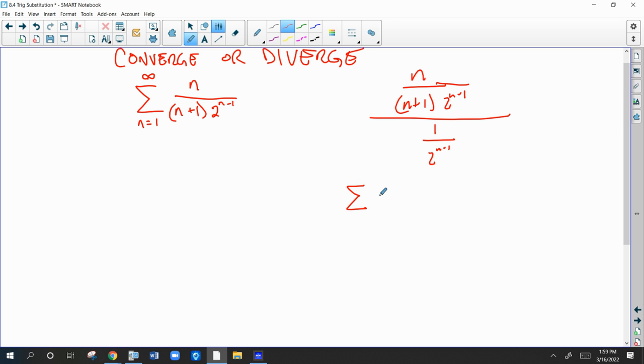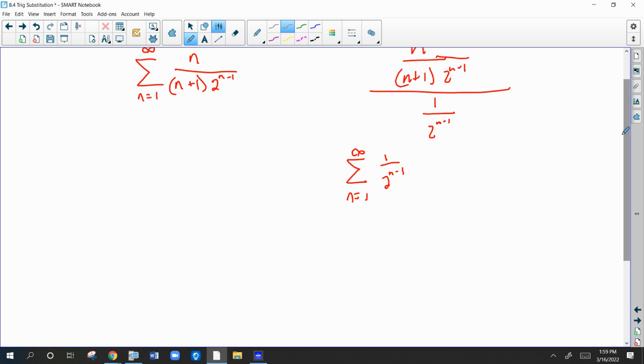So the key, though, is we'd have to know what this does. Well, the fact that it's 2 to the n minus 1 is making me think that maybe it's, and hopefully, it's a geometric series.